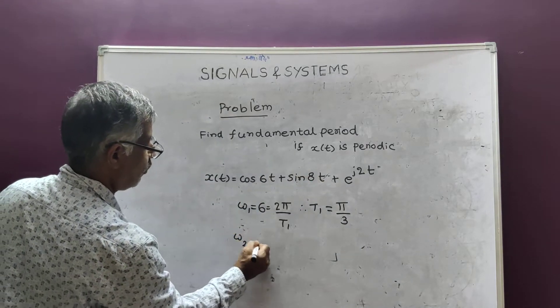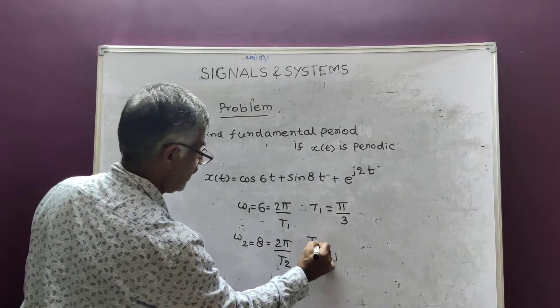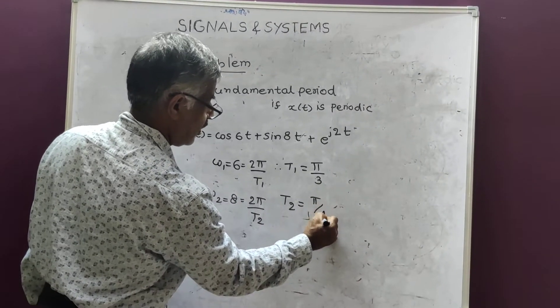Omega 2 is equal to 8, is equal to 2π by t2. Therefore, t2 is equal to π by 4.